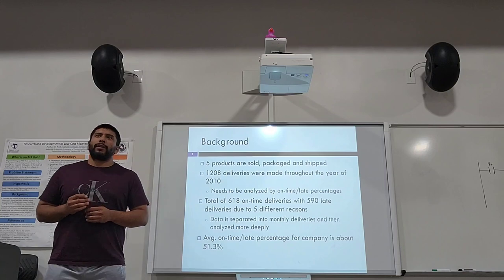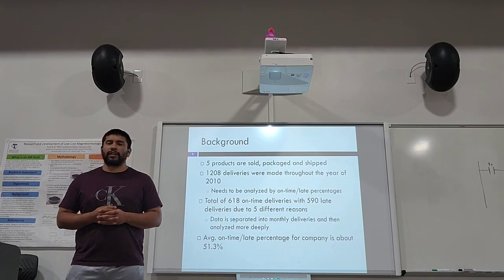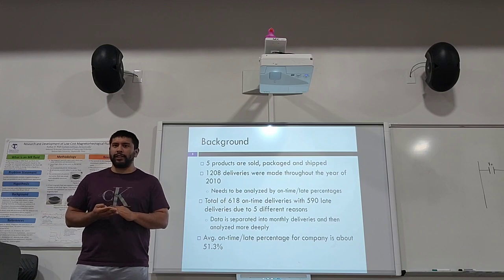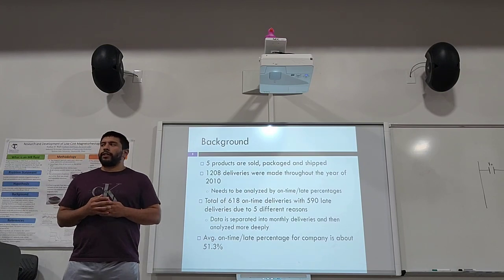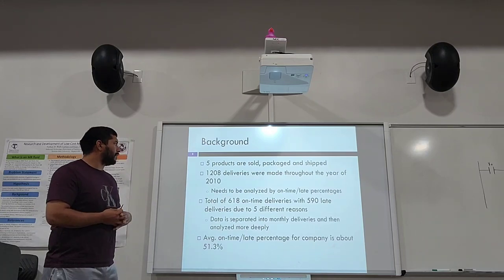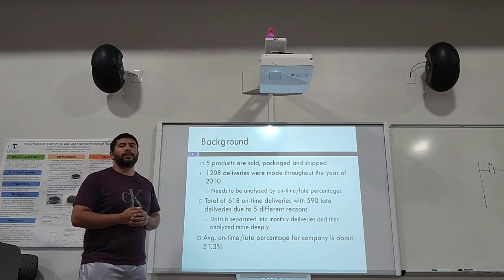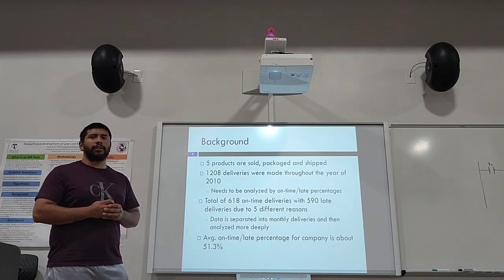A little background about the problem. Five products are sold, packaged, and shipped by this company: product A, B, C, D, and E. 1,208 deliveries were made throughout the year of 2010, and the data needs to be analyzed by on-time and late delivery percentages.